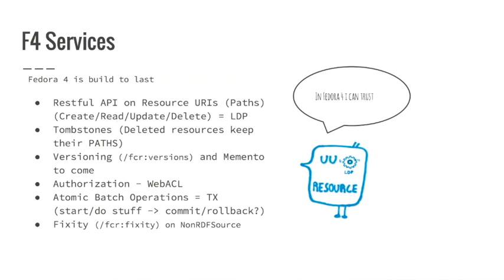What else does Fedora 4 provide for us? Fedora 4 is really built to last. It has a lot of preservation capabilities. First, we can use these paths — these URIs — to do stuff on them. So we have a RESTful API that allows us to create, read, update, and delete everything directly. We also get tombstones: if I delete a resource, the path still lives in Fedora. That means if I remove something that is not LDP managed and someone else is pointing to it, at least they would know it was deleted — the URI will still be there.